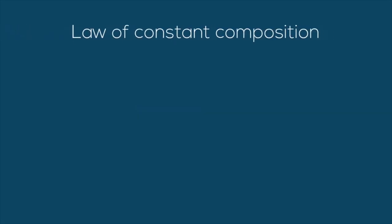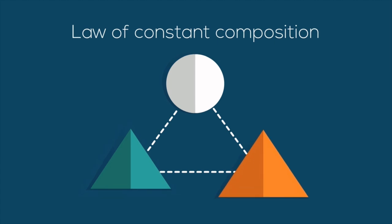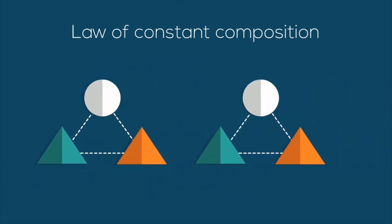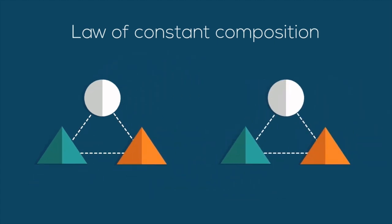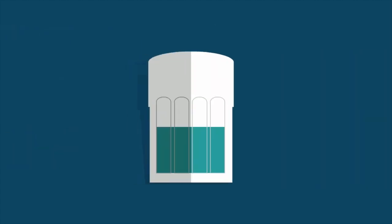The law of constant composition states that in a given chemical compound, all samples are made up of the same elements combined in the same proportions. Let's use water as an example to make this clearer.